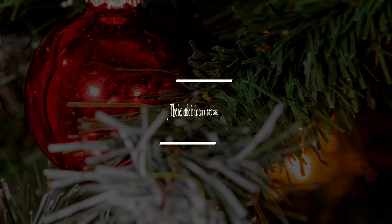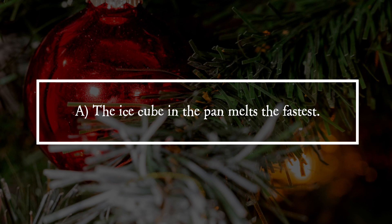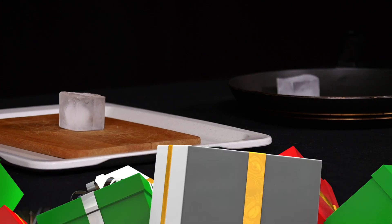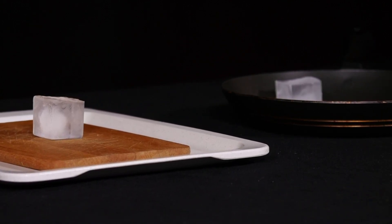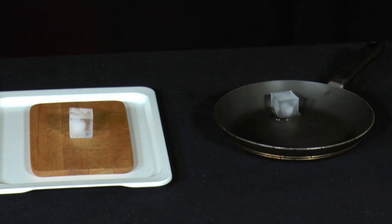It is answer A: the ice cube in the pan melts the fastest. A pan is made of a material that has a particularly high thermal conductivity. It is supposed to quickly transfer the high temperature of the cooker top to the frying fat or food in the pan.